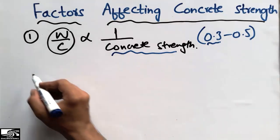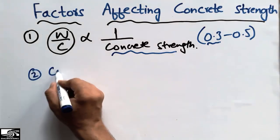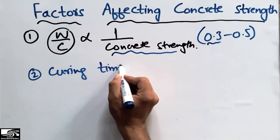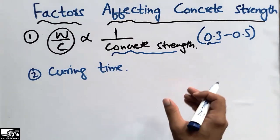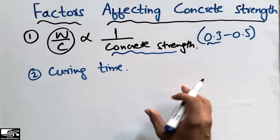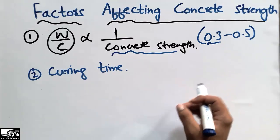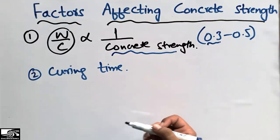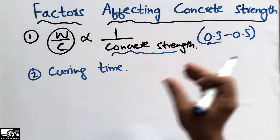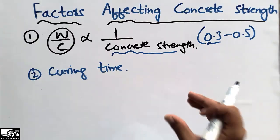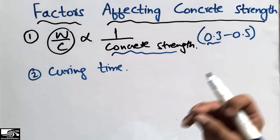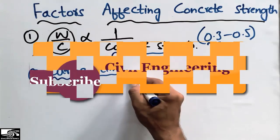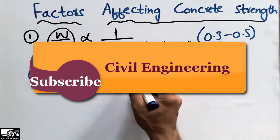The second factor which affects concrete strength is the curing time. Curing time means that we should place the concrete member — it may be a beam, column, or slab — in water, and we should provide water to our structural members so that the hydration process inside the concrete goes well and it increases the strength of the concrete.